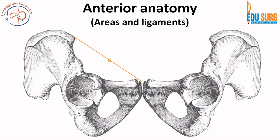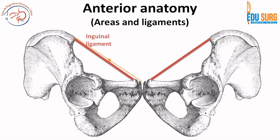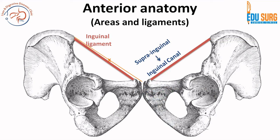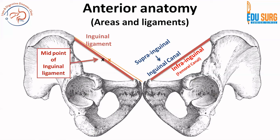Now, keeping the mid-inguinal point as highlighted, the inguinal ligament passes from the anterior superior iliac spine to the pubic tubercle. It divides this area into a supra-inguinal area, which contains the inguinal canal, and an infra-inguinal area, which has the femoral canal. Remember this because when we see the laparoscopic anatomy, this will have a lot of bearing on the Furtado classification.